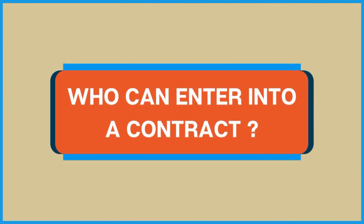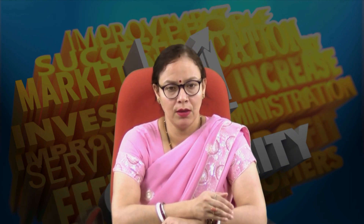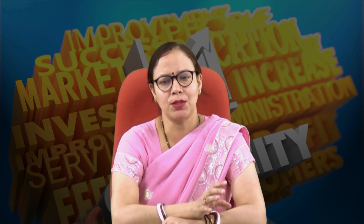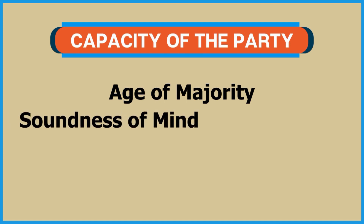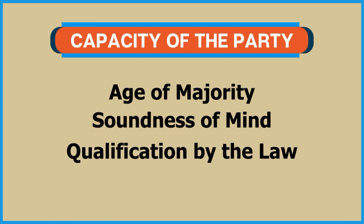Who can enter into a contract? From the definition, those who have attained the age of majority, who have a sound mind, and who are qualified under contracting law and not debarred — they are the ones allowed to enter into a contract. These three conditions establish the capacity of the party in terms of age of majority, soundness of mind, and qualification by law.